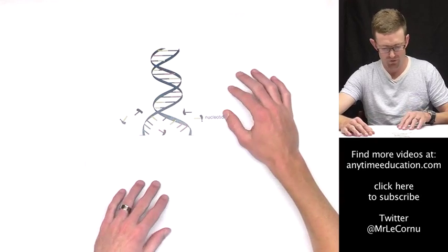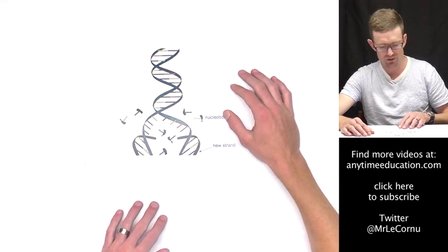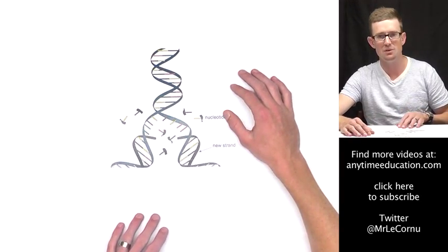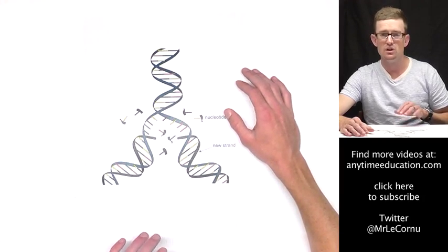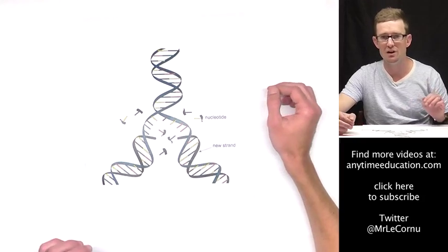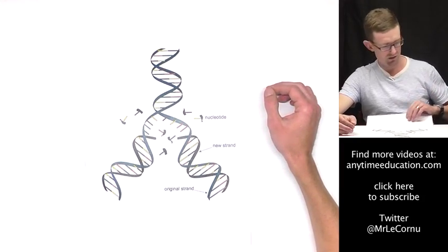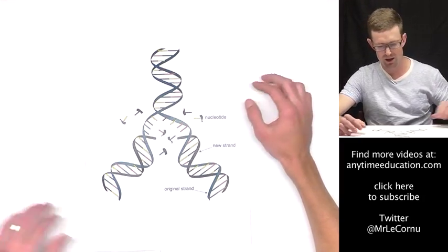So the free nucleotides are able to move in and bind in a complementary manner to their corresponding pair. And if I slide this paper down further, you'll see that's exactly what's taken place. Now there's some enzymes that help that to occur called DNA polymerases.